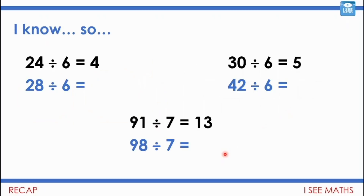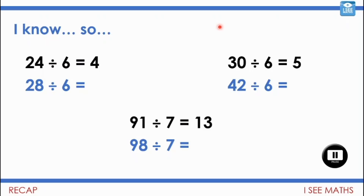Now in a similar way I want to see if you can answer these questions. The black fact at the top is going to be useful for helping out the blue fact underneath. So 24 divided by 6 equals 4 — how many 6s in 24? There's 4. So how can you use that to work out 28 divided by 6, and the other two examples? Pause the video and have a go.